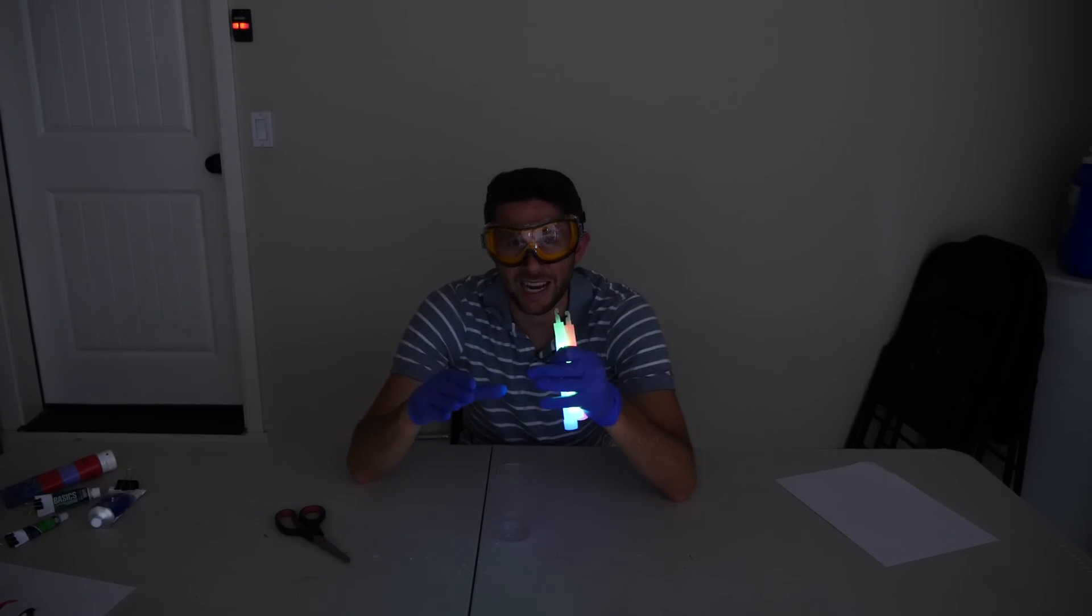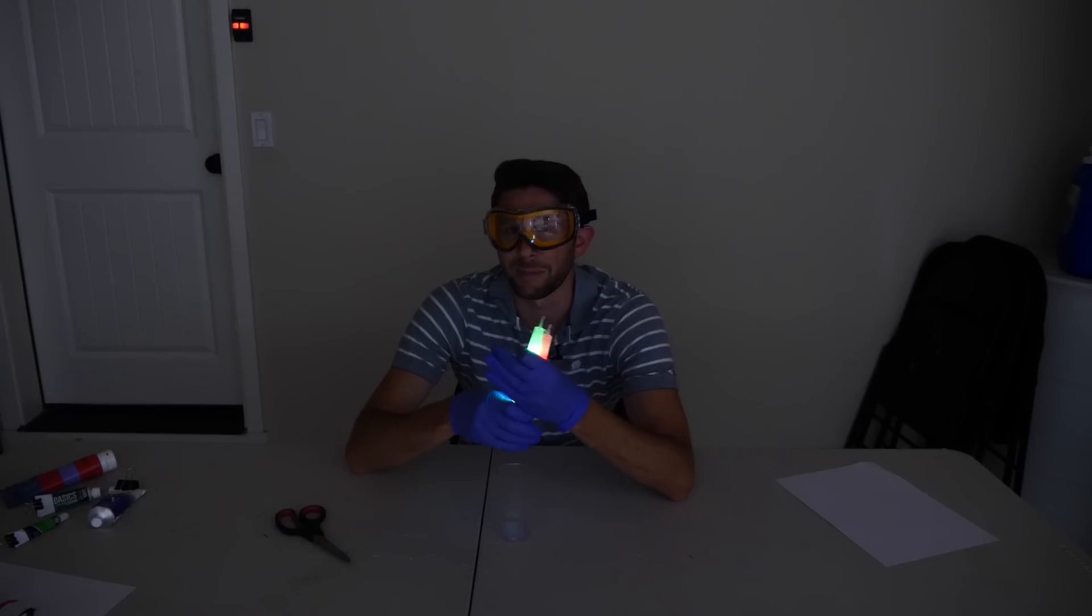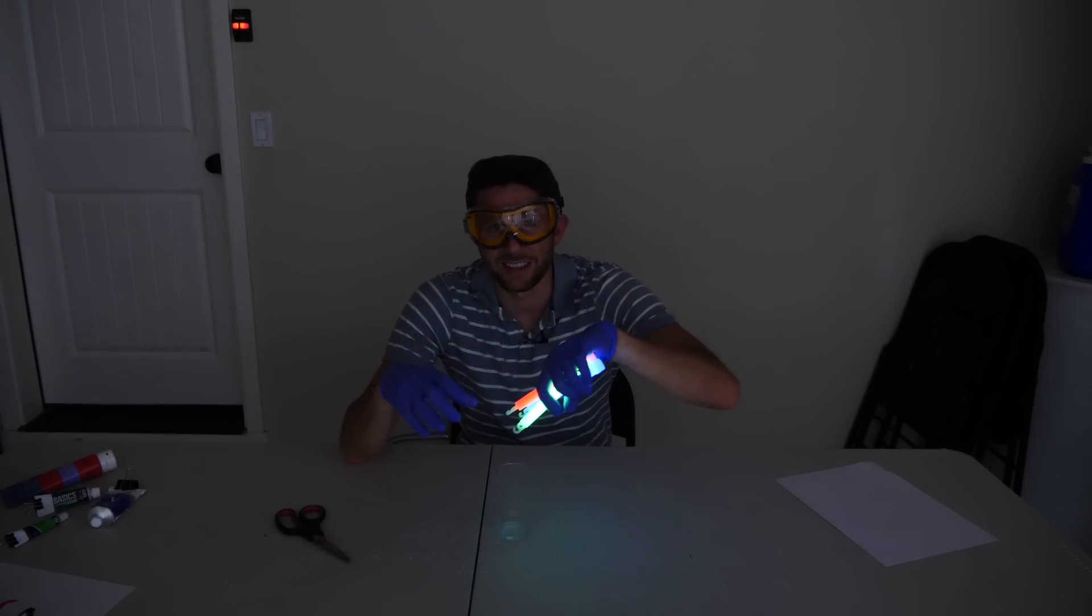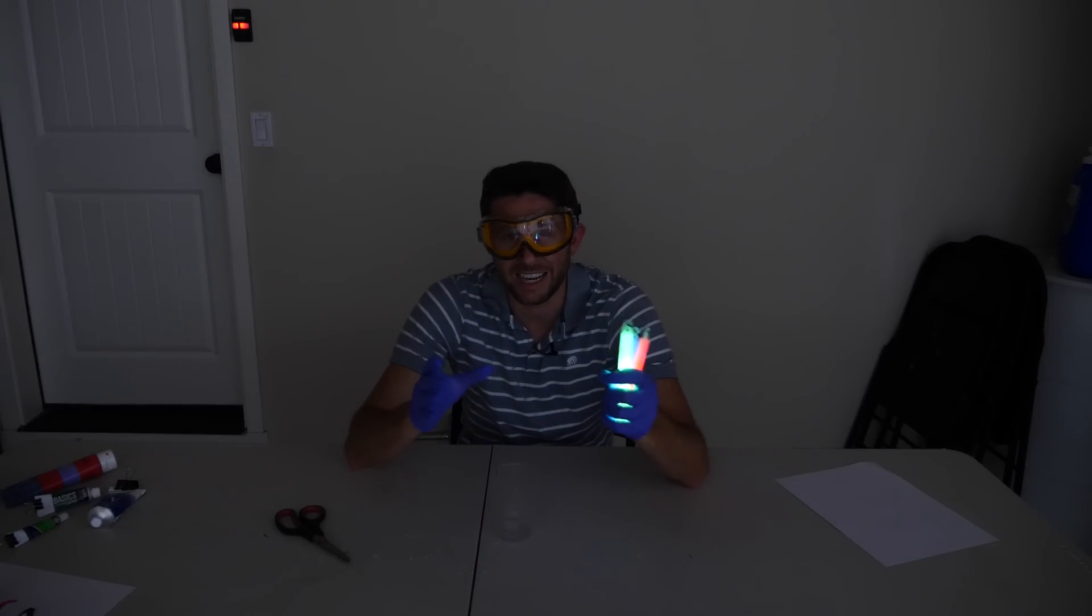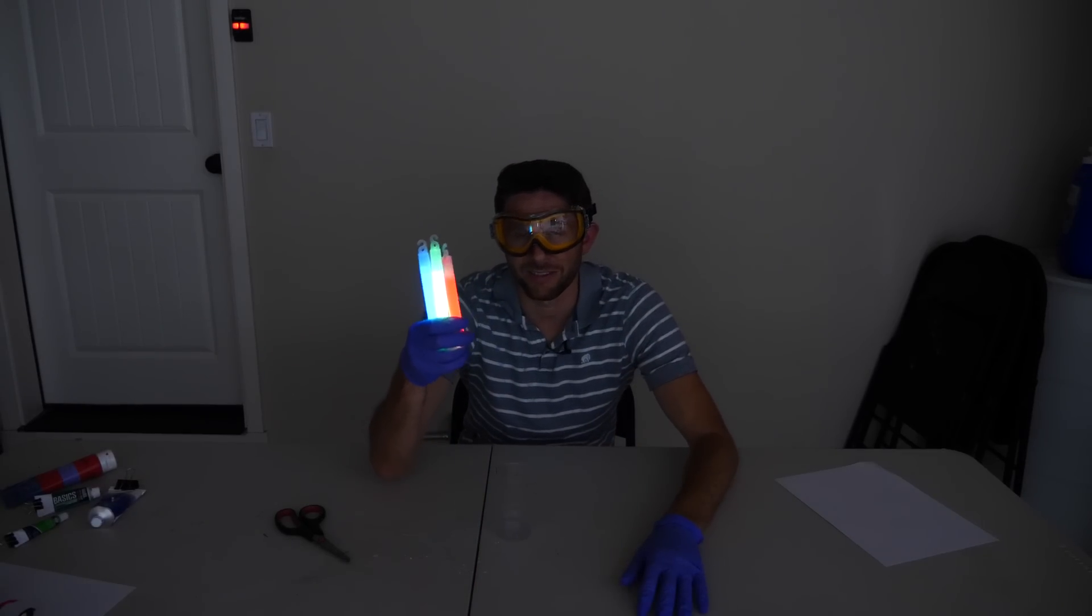Is it going to be subtractive color mixing like my paint? Or is it going to be additive color mixing like mixing light together? So am I going to get this dark muddy mixture or am I actually going to get white? Am I going to get this white mixture out of these three different colors?